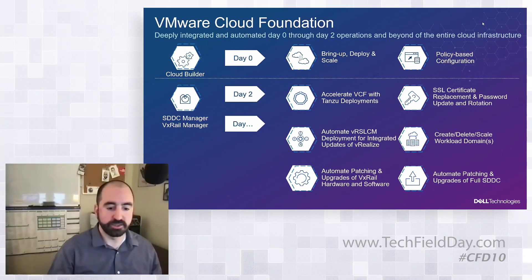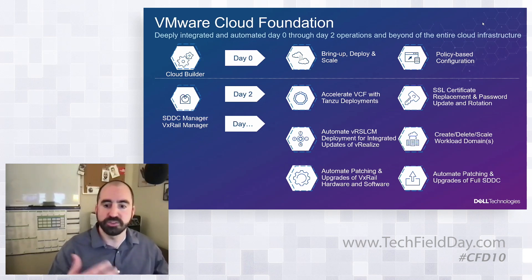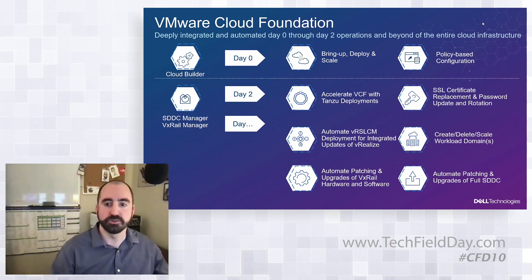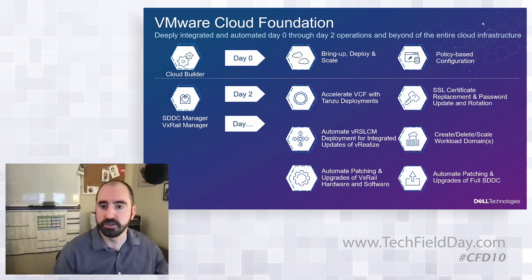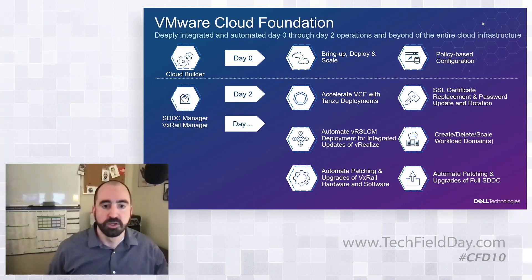VCF on VxRail lays down the entire VMware stack — compute, storage, and networking abstractions, plus intelligent operations and automation through the vRealize suite. What we don't yet have are automated workflows for resource provisioning. To have what could be considered a consumable private cloud, the customer still needs to set those up — working with expertise to do integrations with their service desk or however they want to make it easier for devs or users to consume the infrastructure.